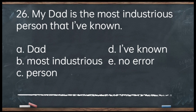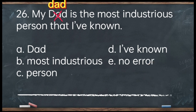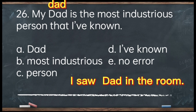Number 26. My dad is the most industrious person that I've known. A. Dad. B. Most industrious. C. Person. D. I've known. E. No error. The answer is letter A — 'dad.' 'Dad' is only capitalized if you regard it as a proper noun — when it doesn't have a possessive pronoun or an article. For example: I saw Dad in the room. In that sentence, it doesn't have a possessive pronoun, so Dad is a proper noun.